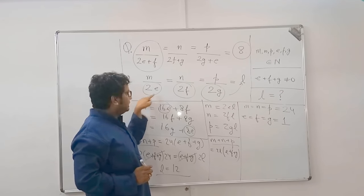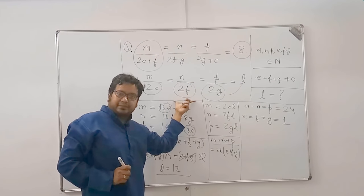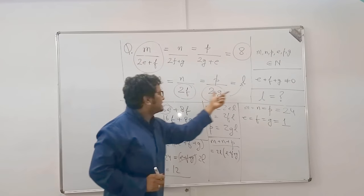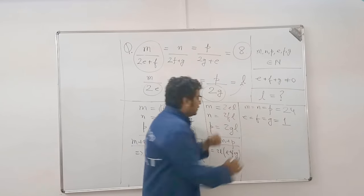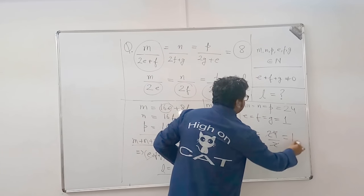24 by 3, 8. 24 by 2, 12. Yes. 24 by 2, 12. Yes. These three are also coming equal. And what is this value equal to? L. So, we have got the answer. L is nothing but 24 by 2. That is 12.